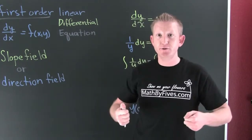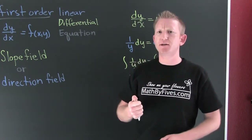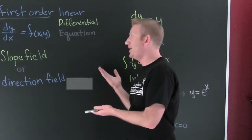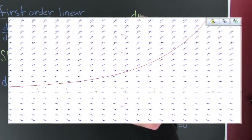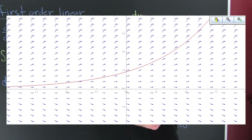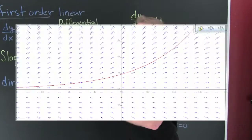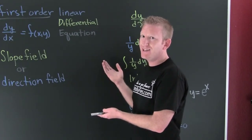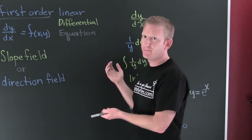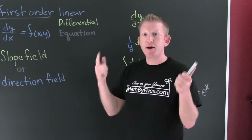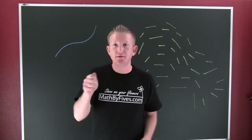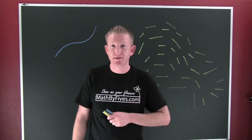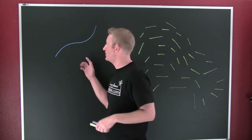Now let's let the computer plot a solution with that specific initial condition. Take a look at that — doesn't it look like y equals e to the x? Now let's see how the computer does this. To understand how slope fields work and how a specific solution is plotted, we need to go back to first-semester calculus.